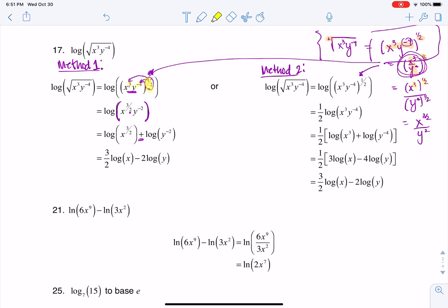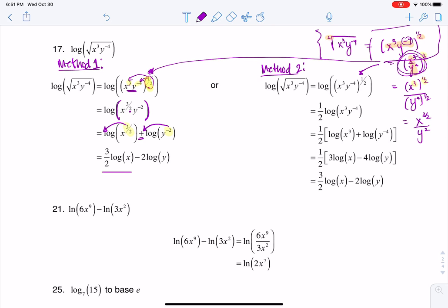And then we have the power rule, which says, if your argument is a power, you can take that exponent and move it down in front. And that's what I'm doing in both of those. So that's how I arrive at 3 halves log x minus 2 log y. And so that's just one way to do it.